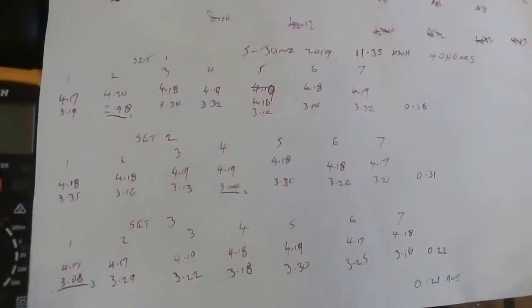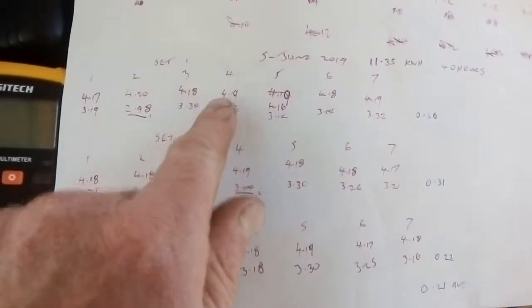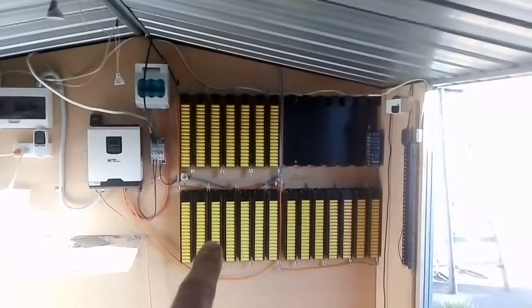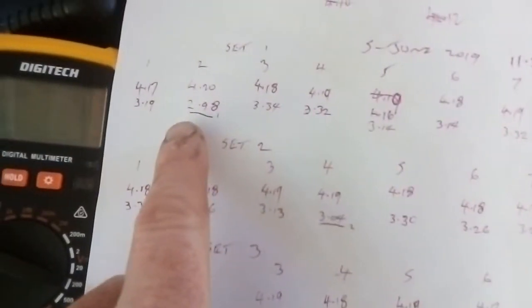...you an idea of how the batteries performed: set one, set two, set three. The difference between the lowest bank and the highest bank was 0.36 of a volt. Two...